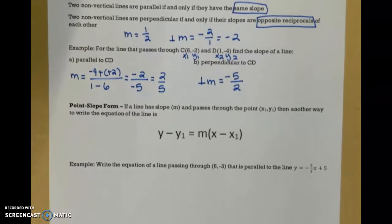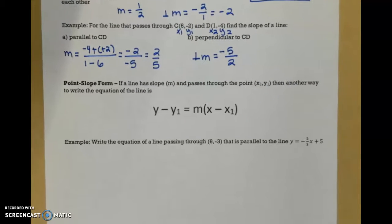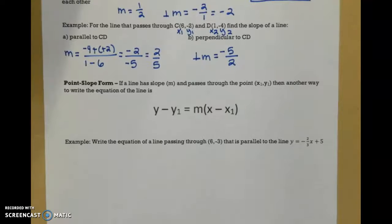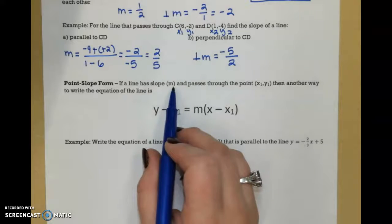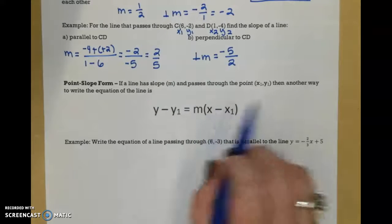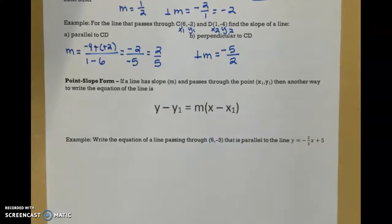Now we're going to talk about one more way to write the equation of a line, and that is called point-slope form. That is y minus y1 is equal to m times x minus x1, where m is still our slope, and x1 and y1 are a point that's on our line. So let's do one more practice problem to practice our point-slope form.